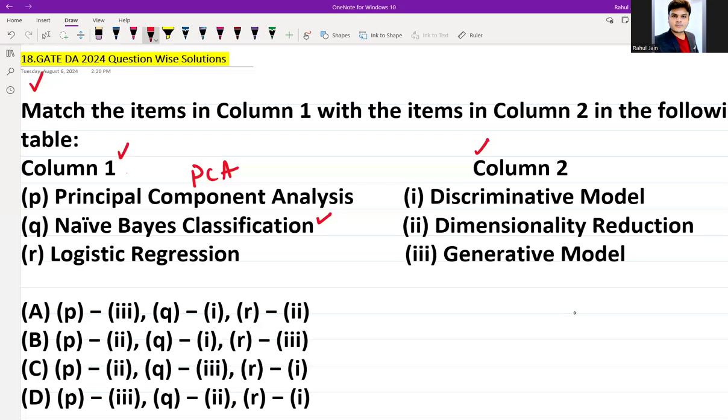PCA, Principal Component Analysis, is a technique for dimensionality reduction. It's a very well-known algorithm, so we can directly match p with ii. P with ii means option A is cancelled, option D is cancelled. Currently we have matched p with second.